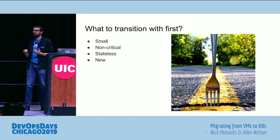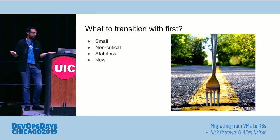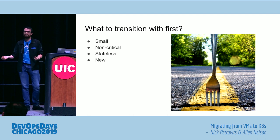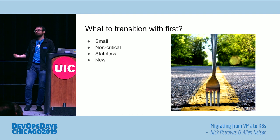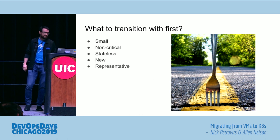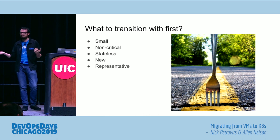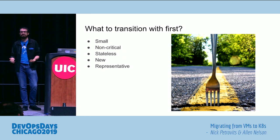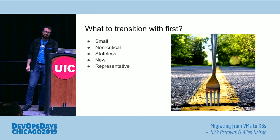The next criterion is being new. This is an easy way to encapsulate some of the other criteria — it's going to be small because it's new, non-critical because it doesn't exist yet, and stateless because you have the opportunity to make it as stateless as possible. So if you start with a new app, you'll save yourself a lot of headaches. But you don't have to — you can certainly start with something that already exists. The last criterion is that it should be representative. You don't want to deploy an app that's the very first time you're using Node.js when you've only done Python, or adopt an entirely new paradigm. In the beginning, you want something that will pave the path forward for other apps.